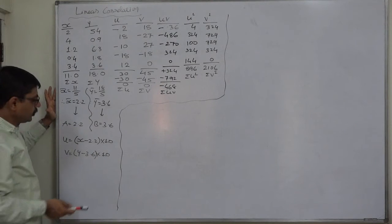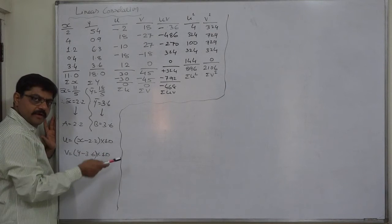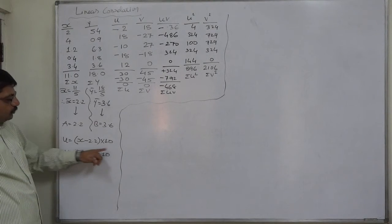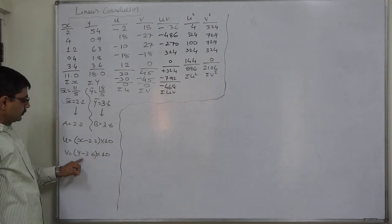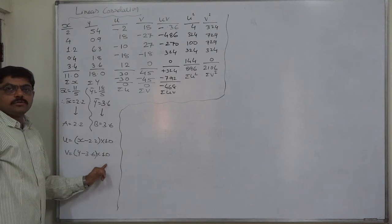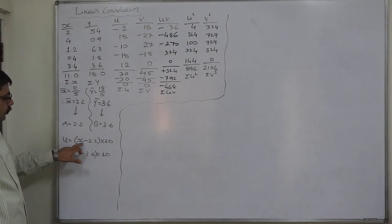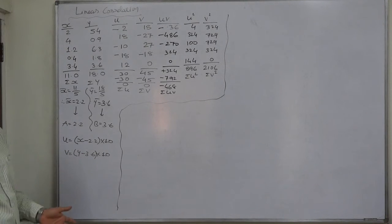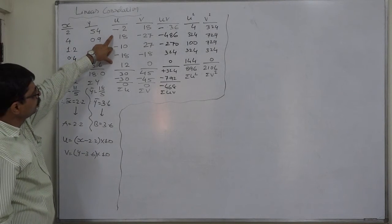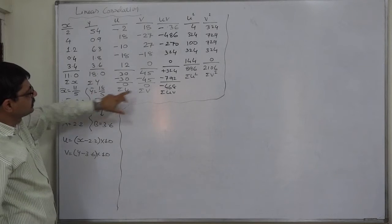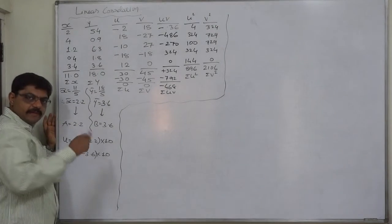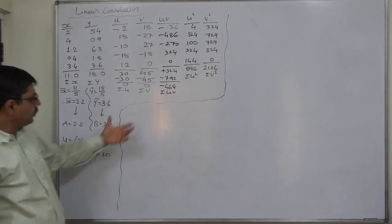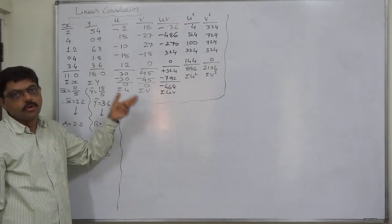So u is x minus 2.2 into 10, and v is y minus 3.6 into 10. As a result, we get u and v. The summation of them are 0 because we have actually subtracted original means, and we know that the sum of deviations taken from arithmetic mean is always 0. The value of negative and positive deviations are the same.